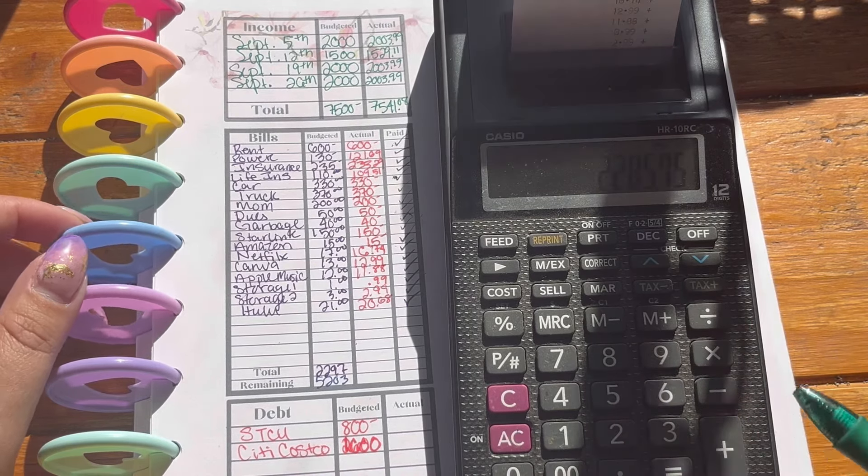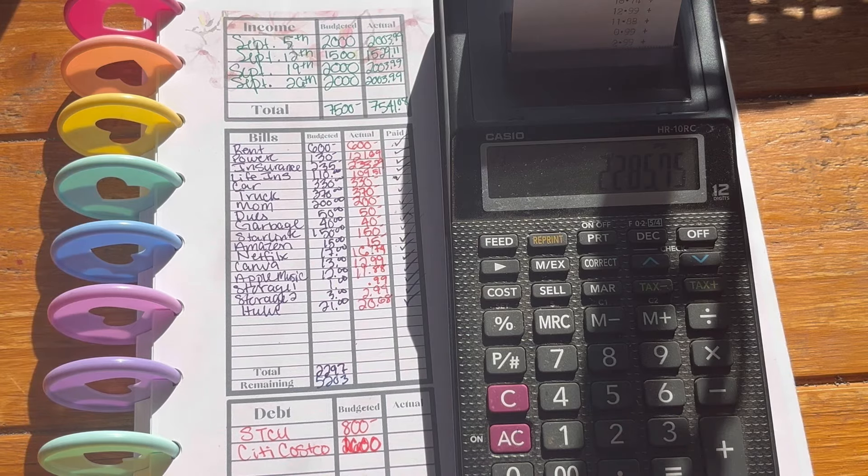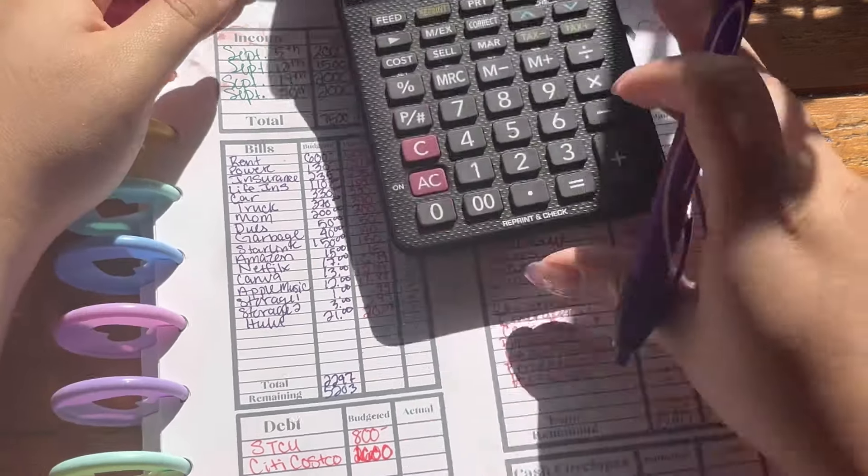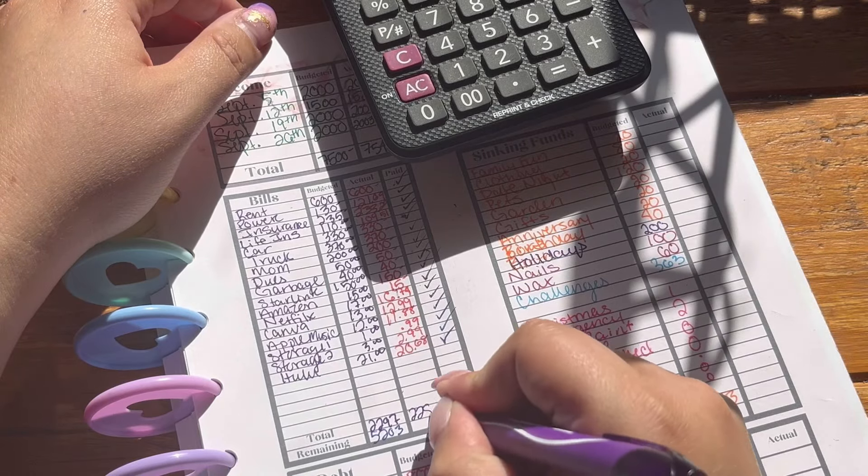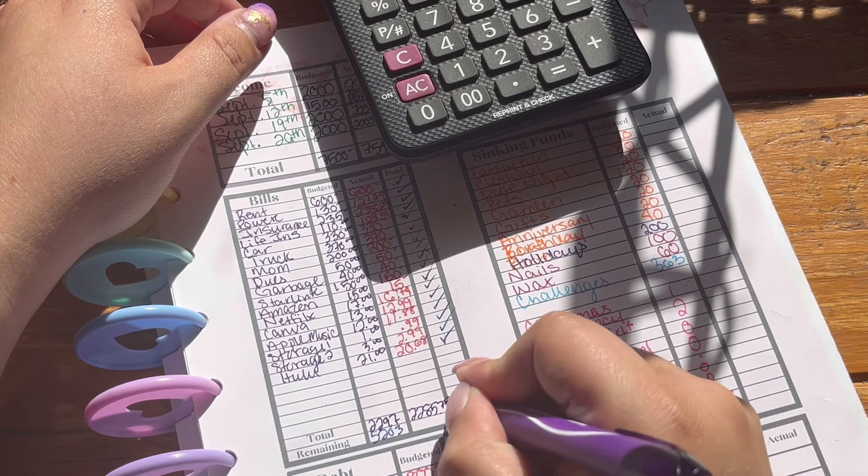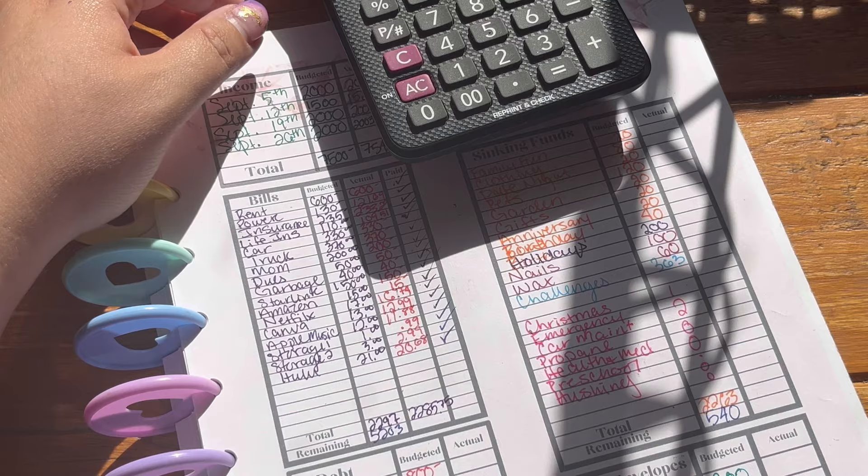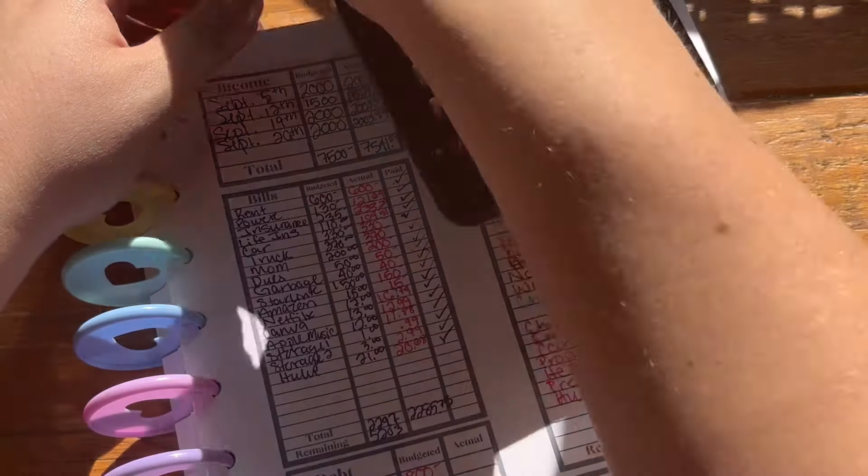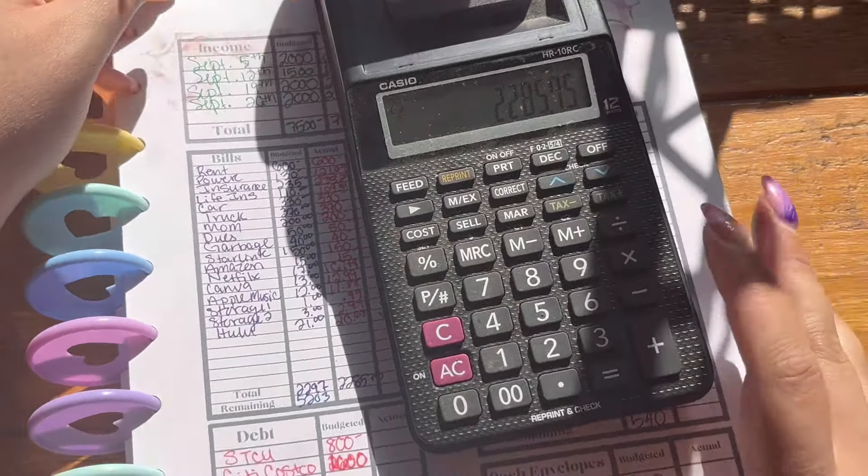Okay. So we came in at 22, 85, 75, 22, 85, 75, which is great because that is less than what we thought. Fantastic. And that's awesome.